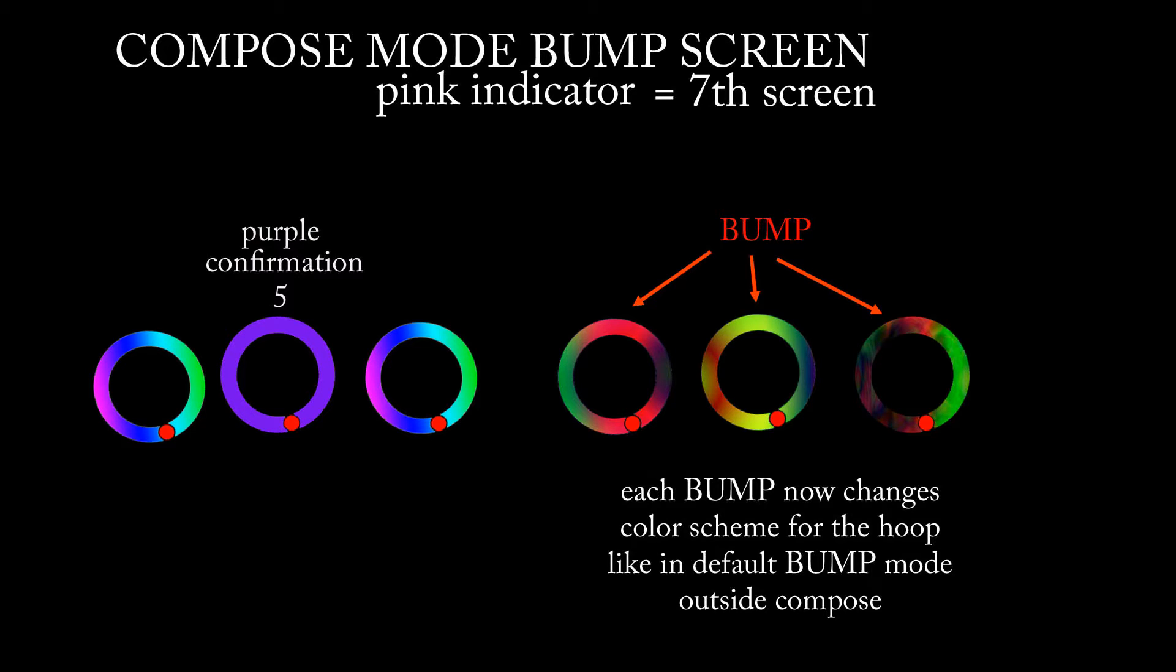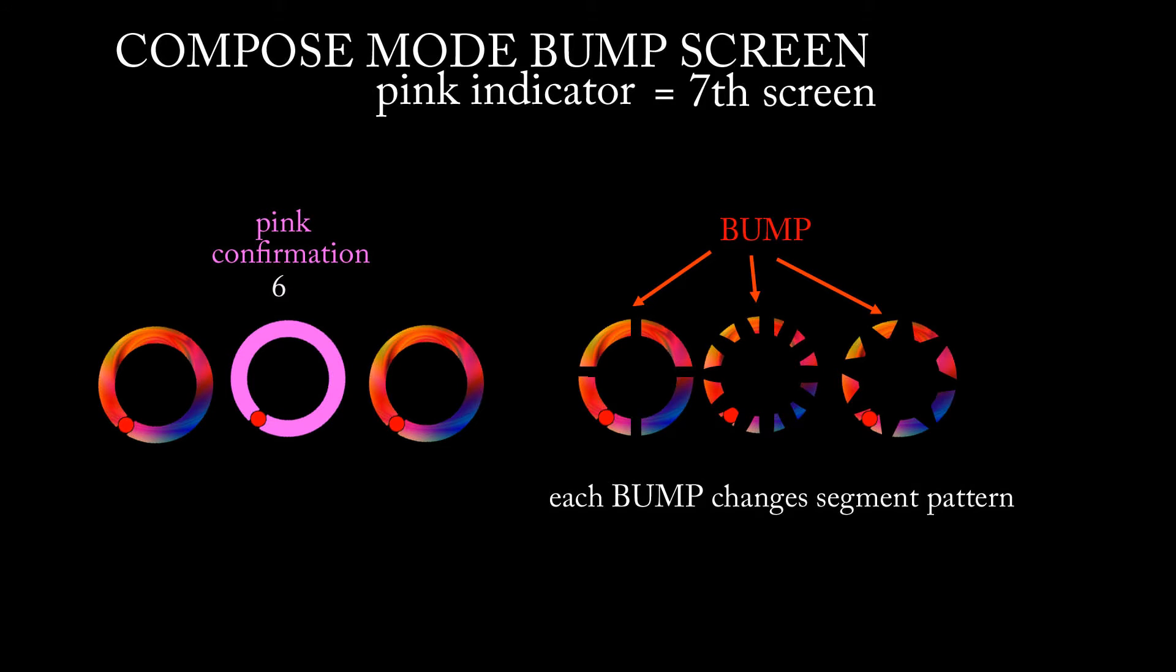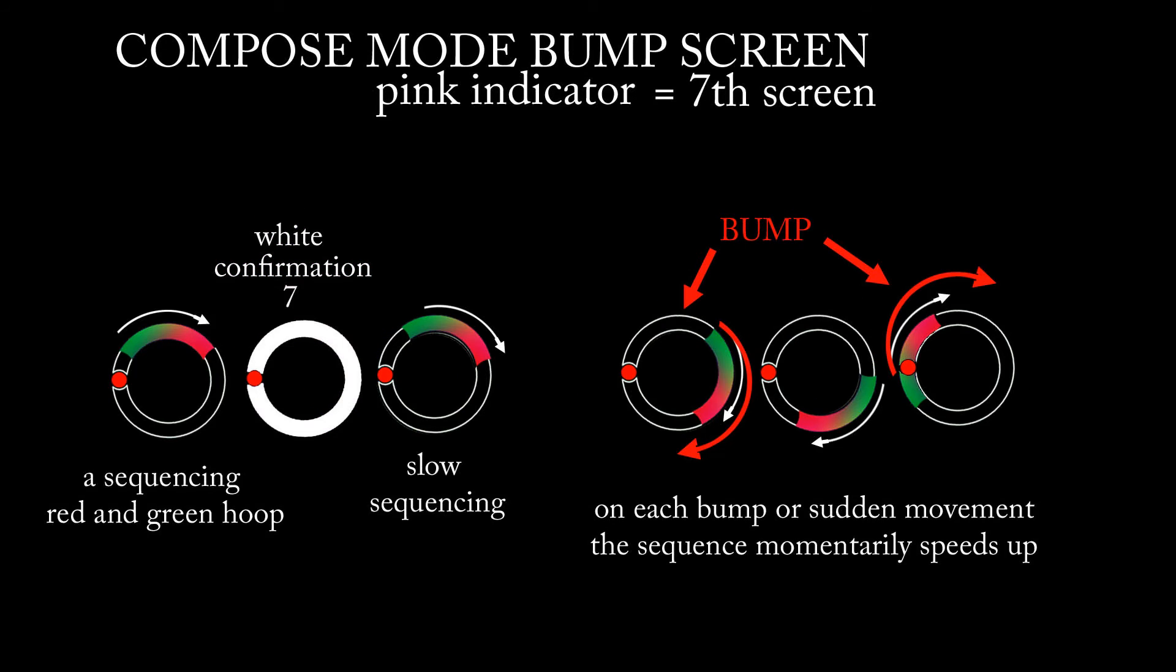Purple cycles the color schemes, like the default bump mode in the other quivers. Light pink cycles segment pattern, and white will momentarily make any effect faster.